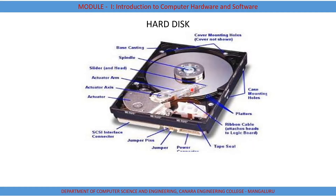Each read-write head is attached to a single access arm, so they cannot move independently. The read-write heads can pivot back and forth over the disk to read or write data. The data is actually stored on the surface of the disk in sectors and tracks.